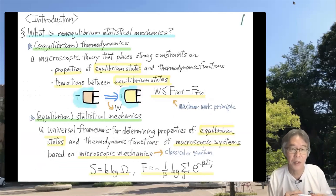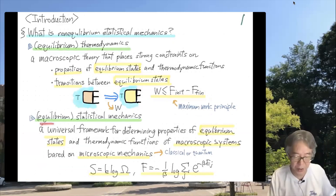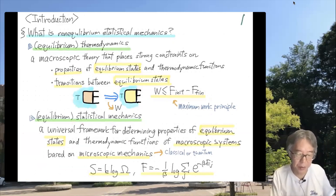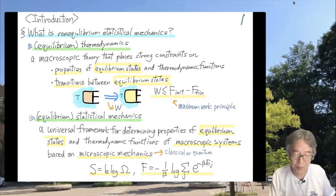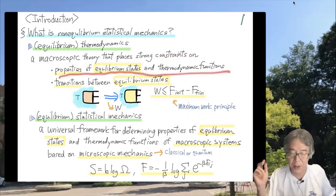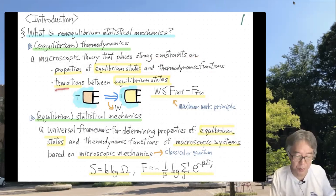Before discussing non-equilibrium statistical mechanics, let's see what equilibrium thermodynamics and equilibrium statistical mechanics are. Equilibrium thermodynamics is a macroscopic theory — we never talk about molecules or atoms. This theory places strong constraints on properties of equilibrium states and thermodynamic functions, and also on possible transitions between equilibrium states.